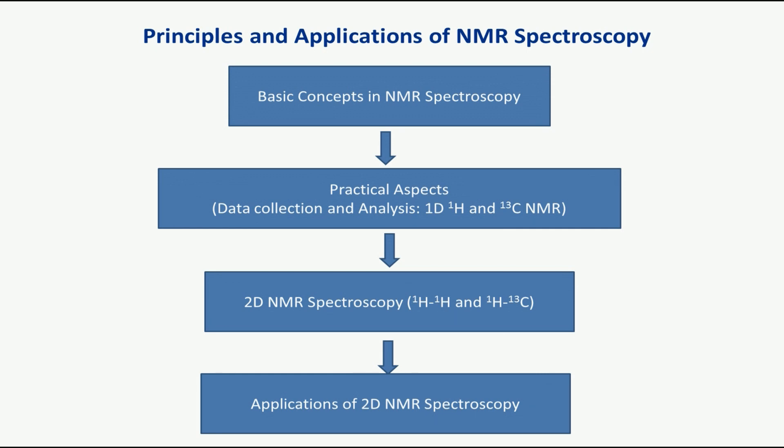In the third part, covering weeks six and seven, we will look at 2D NMR spectroscopy. We will see how proton-proton correlation experiments and proton-carbon heteronuclear experiments can be acquired, how they can be recorded, and how they can be interpreted.